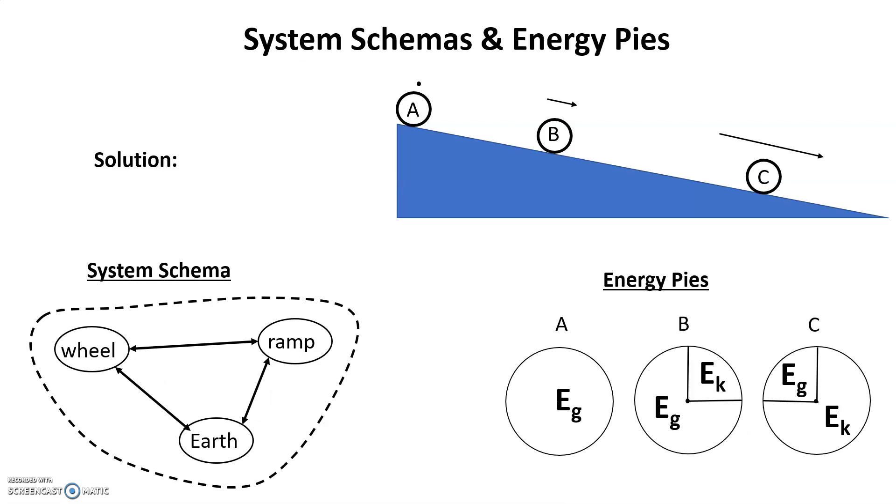So here's the solution. There's the system schema, the wheel, the ramp, the earth. The earth is touching both the wheel and the ramp, and the wheel and the ramp are touching one another. There's a dotted line around everything. And then the pies we just came up with. That's the solution.